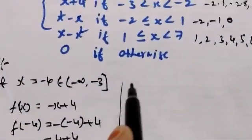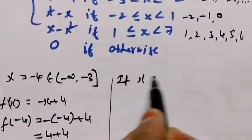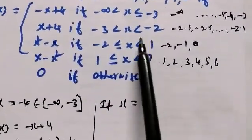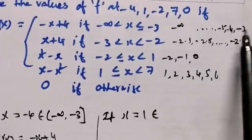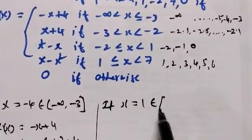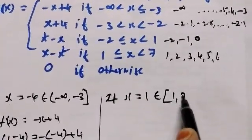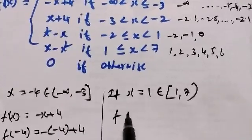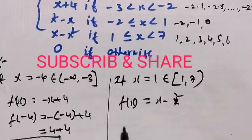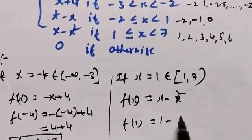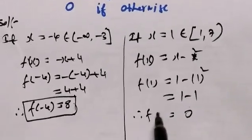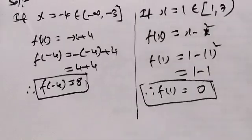Therefore, f of minus 4 is equal to 8. So let's take 1. If x is equal to 1, we look at where 1 falls. It is close to the interval point where 1 is equal to minus 3, and in the other interval point 1 is equal to 0. Therefore the function of x gives f of 1 equal to minus 1.